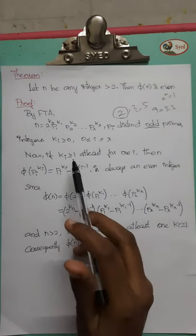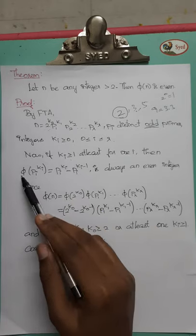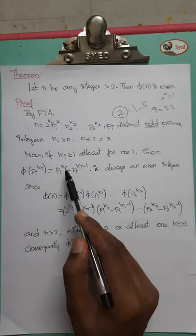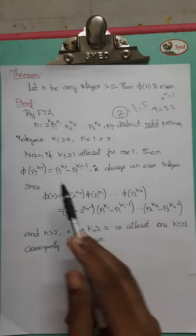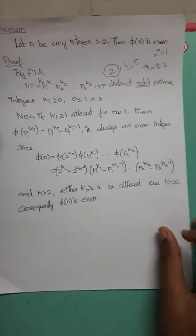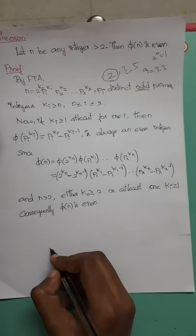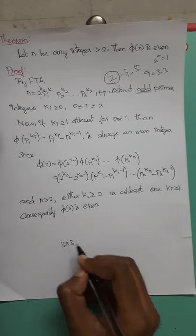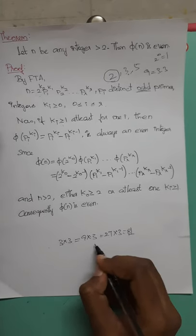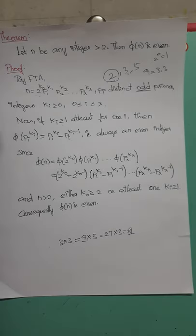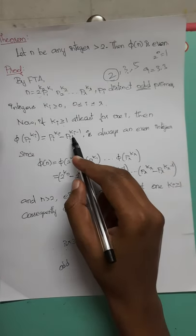Now, if k is greater than or equal to 1, then pi is greater than or equal to 1. We can see the odd primes. If there are odd primes, we can write them, and the odd primes are odd. So we have an odd number, an odd integer. That's the power k minus 1.